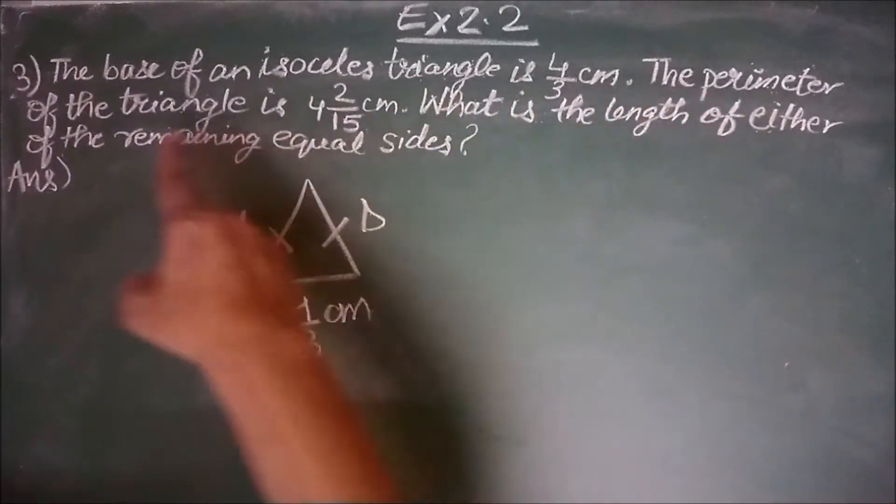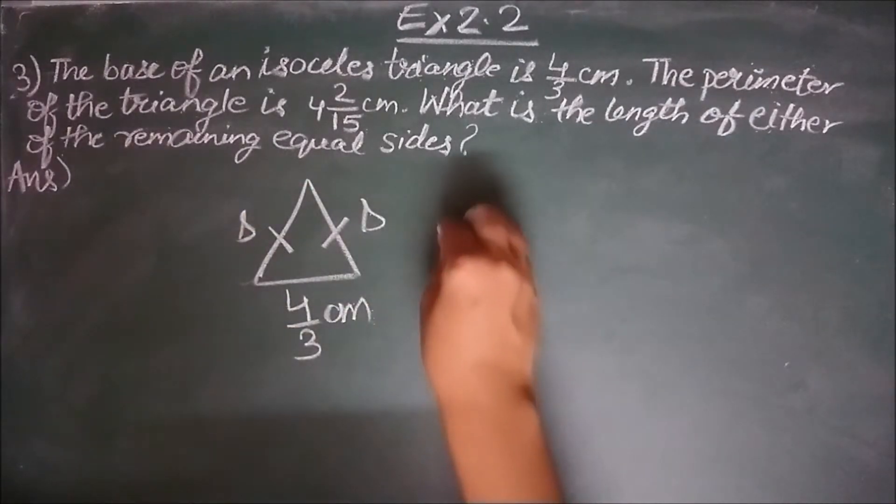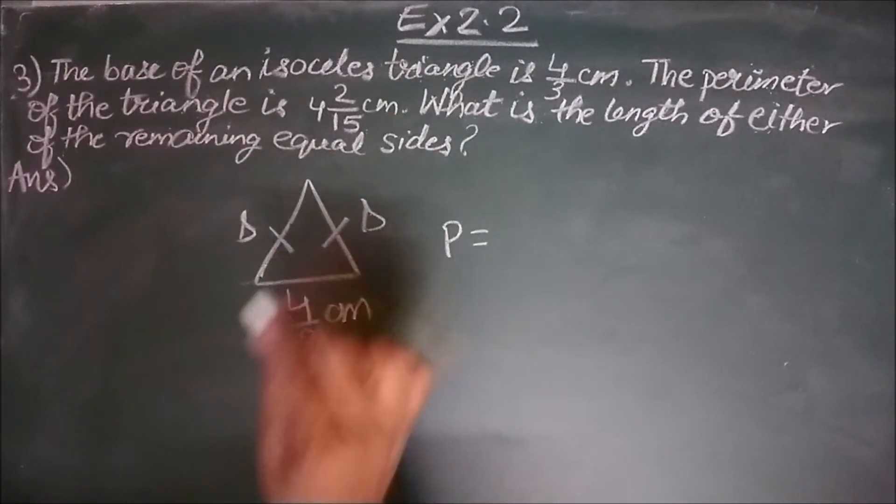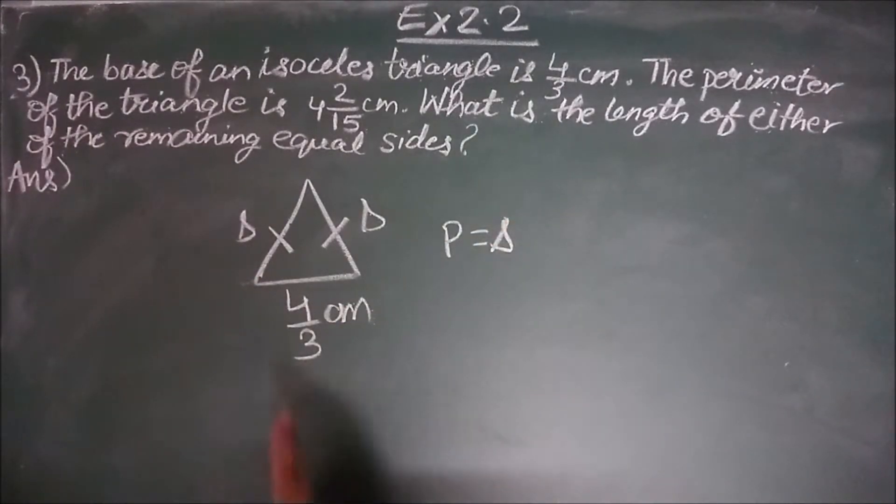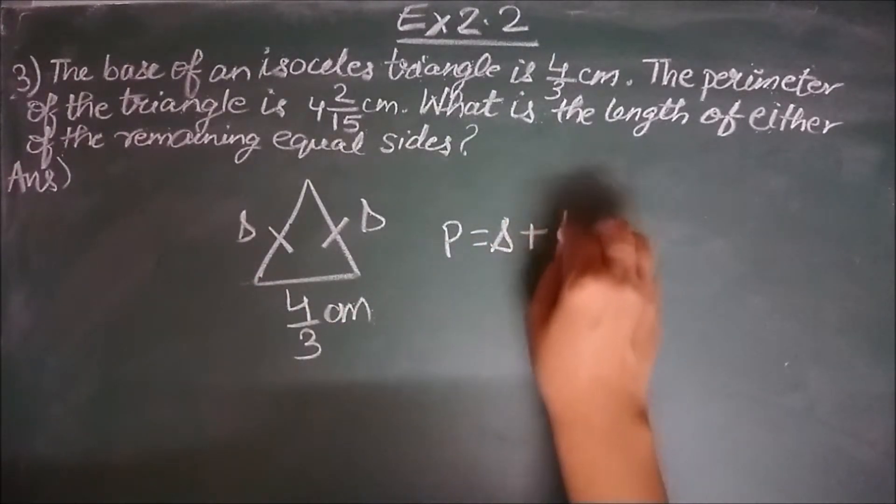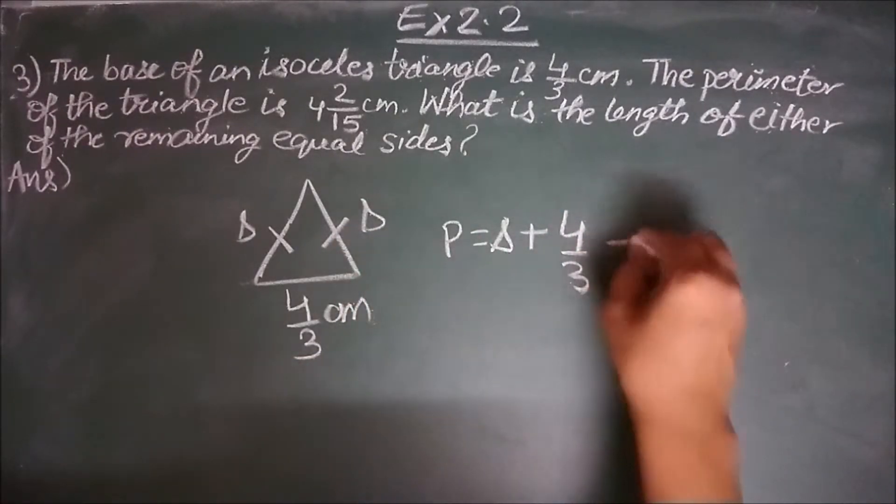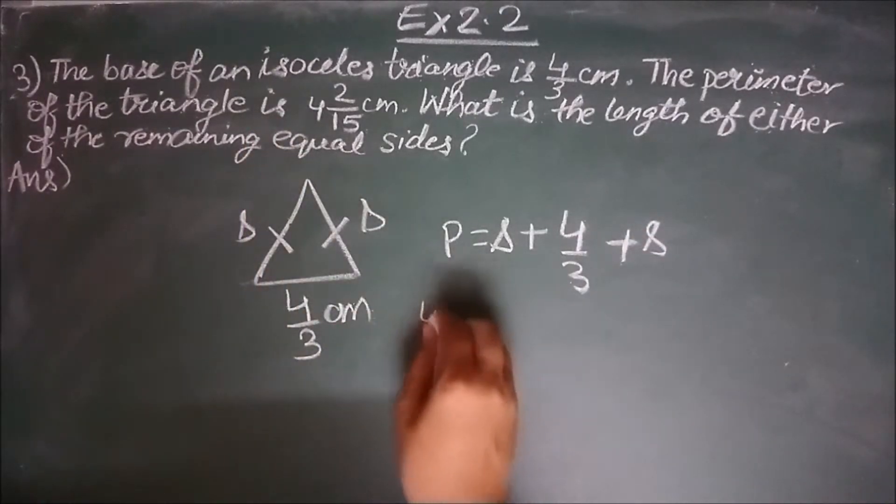And it is given that the perimeter of the triangle is 4 2 by 15 cm. How will you calculate perimeter of the triangle? The perimeter of the triangle will be equal to side 1, side 2 and side 3. Side 1 is of S length. Side 2 is of 4 by 3 length. And side 3 is of S length. And the perimeter is given as 4 2 by 15 cm.